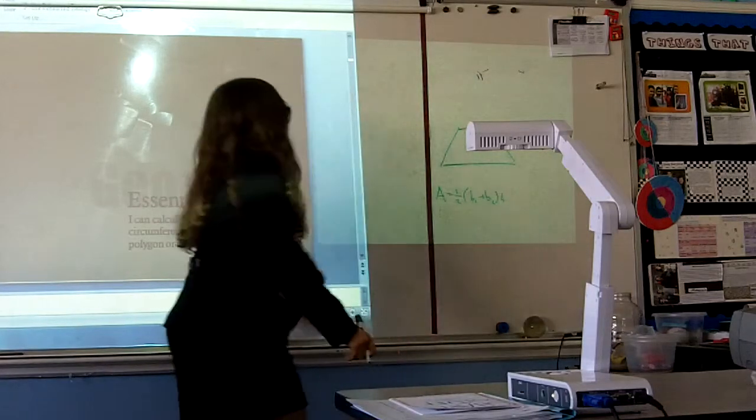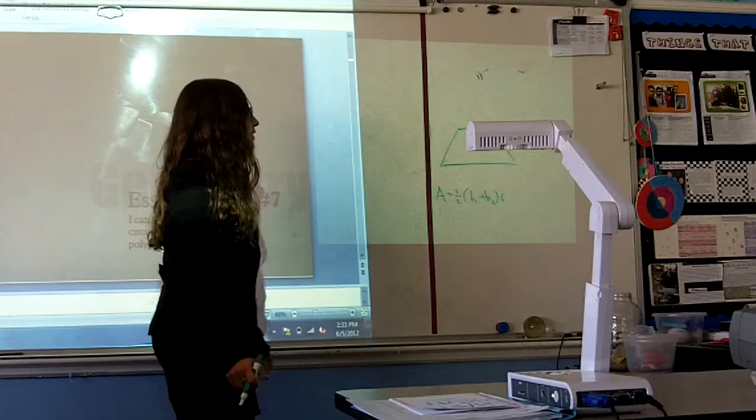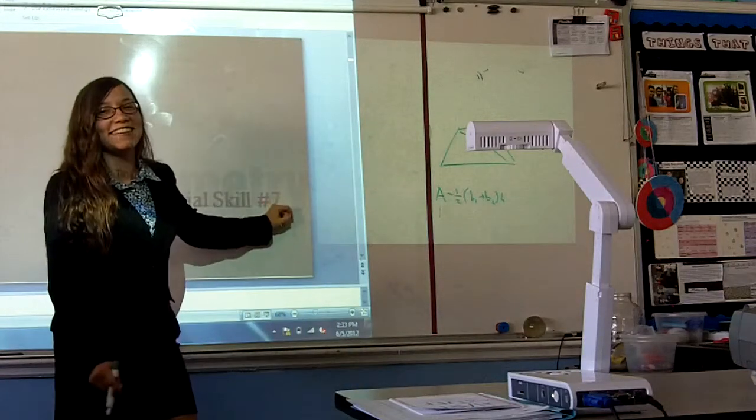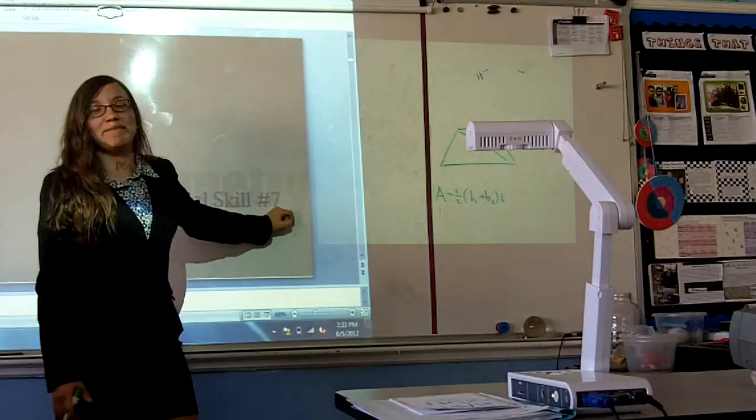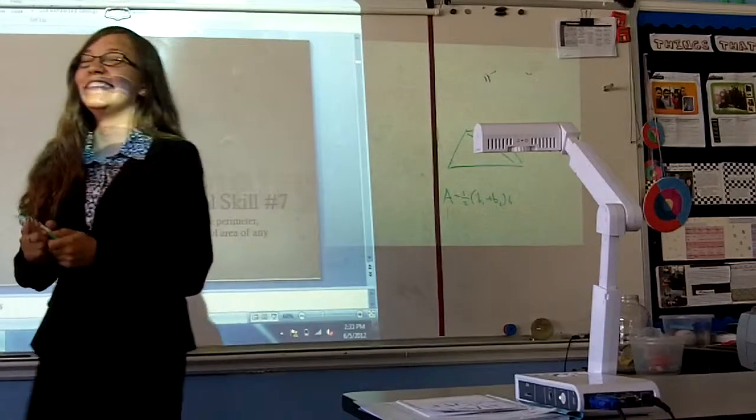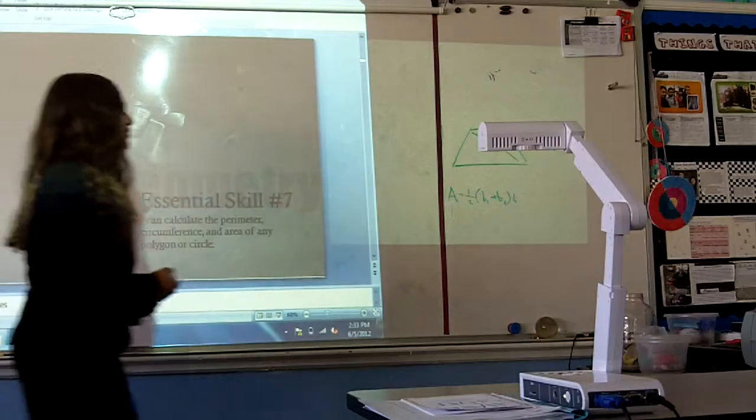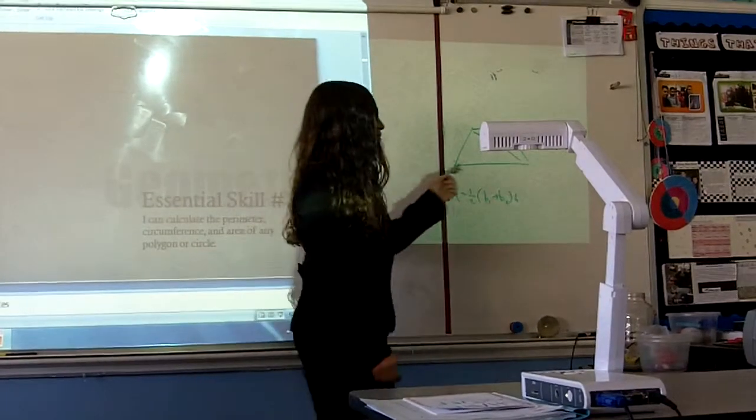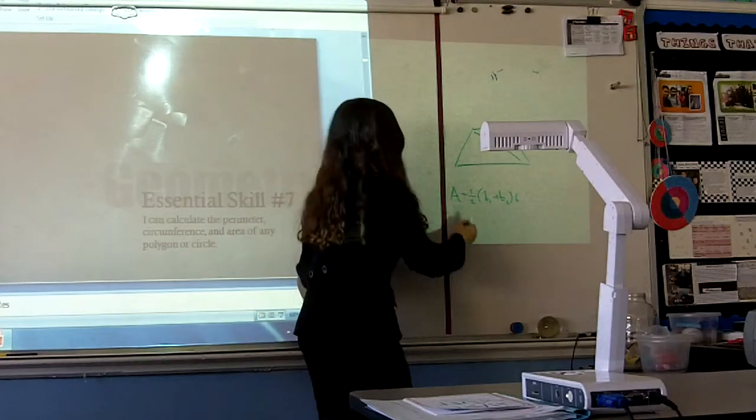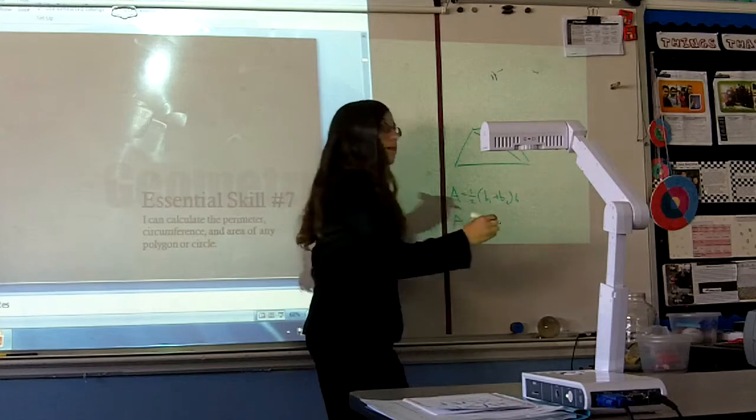This is because if you go like this, the trapezoid is actually made of two triangles and they're congruent. The area of a triangle I believe is A equals one-half base times height. So a triangle only has one base, so you have base one, base two, and then you cut it in half.